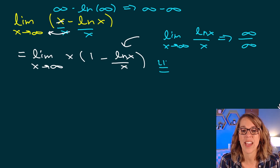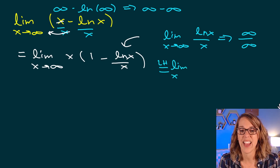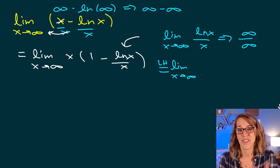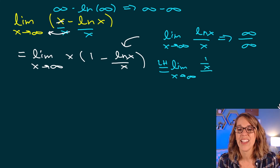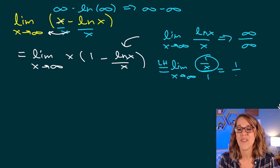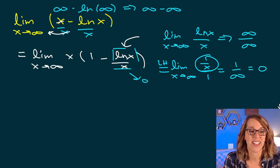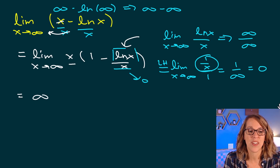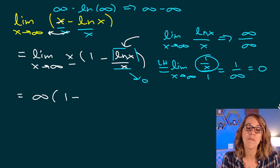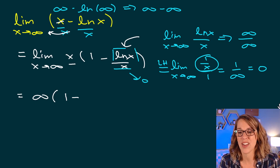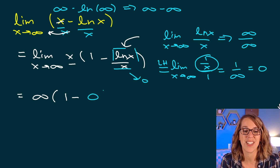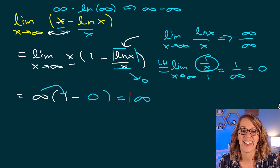Applying L'Hôpital's rule to the natural log of X over X, I take derivatives: the derivative of natural log of X is 1 over X, and the derivative of X is 1, giving 1 over X. Plugging in infinity, 1 divided by infinity goes to 0. Putting it all back together: the limit as X goes to infinity of X goes to infinity, and in the parentheses I get 1 minus 0, so the final answer is infinity.